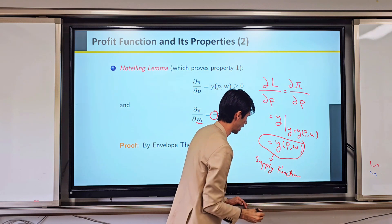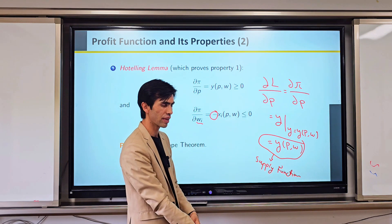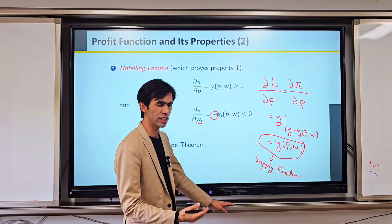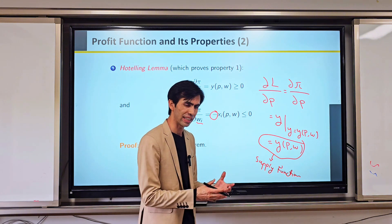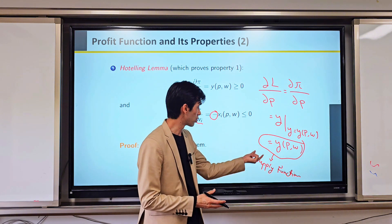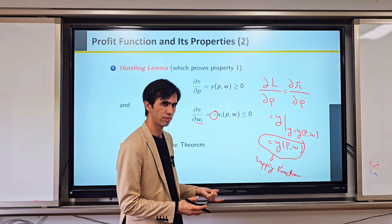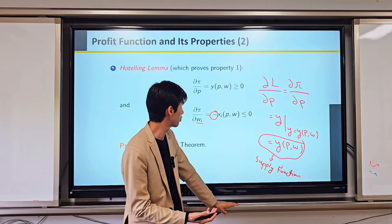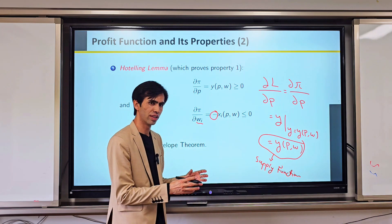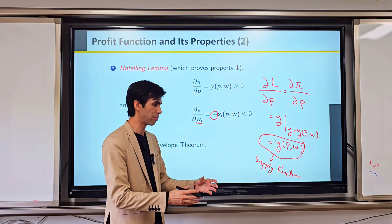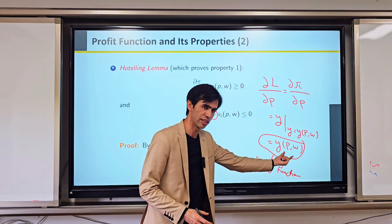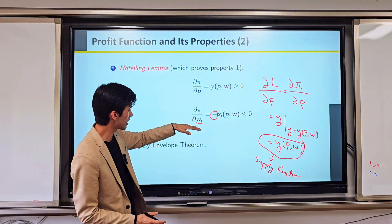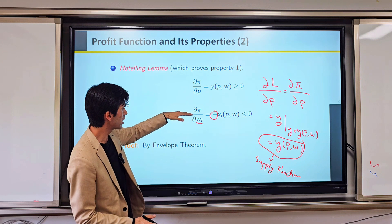This Y = f(P, W) is our supply function, and the value of this supply function is greater than or equal to zero. It equals zero when we produce nothing, but when we have some inputs and produce something, it is positive — greater than zero.